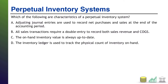All right, welcome back. Which of the following are characteristics of a perpetual inventory system? Let's look at A: adjusting journal entries are used to record net purchases and sales at the end of the accounting period. That is not a characteristic of a perpetual inventory system. Your purchases and your sales are recorded every time you make a purchase or sale transaction, and the inventory account is perpetually updated to reflect that.